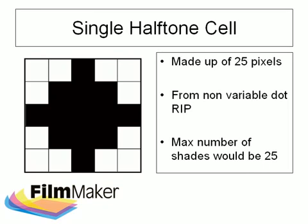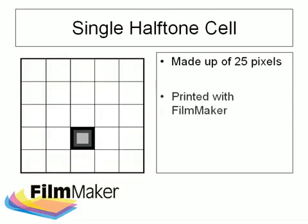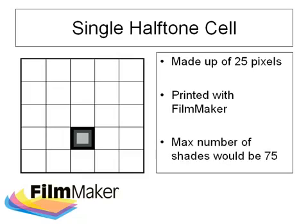The drawback of doing this is that we would then also increase the amount of time it would take to produce each screen positive — but not with Filmmaker. This illustration shows the same cell made up of 25 pixels when outputted on a variable dot printer using Filmmaker. For each pixel, we can achieve three dot sizes, and this will enable us to increase the number of shades in this cell to 75.